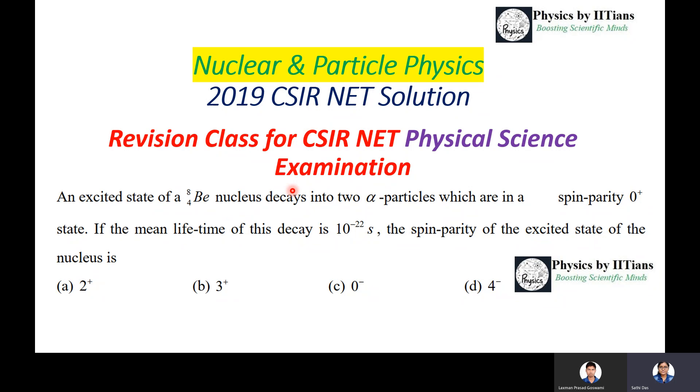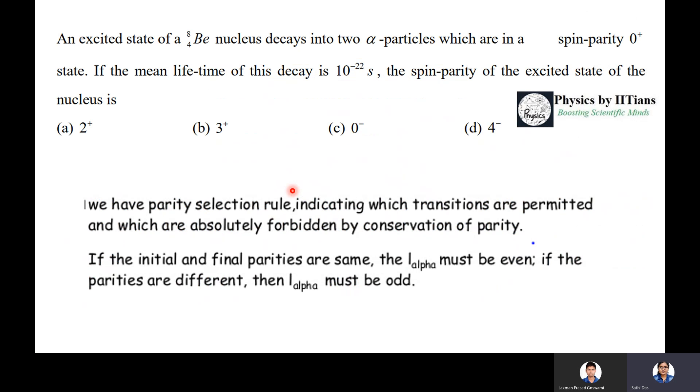I request you to watch this full video for your benefit. The first question that we shall discuss is: an excited state of a beryllium-8 nucleus decays into two alpha particles which are in a spin-parity 0+ state. If the mean lifetime of this decay is 10^-22 seconds, the spin parity of the excited state of the nucleus is 2+, 3+, 0-, or 4-?